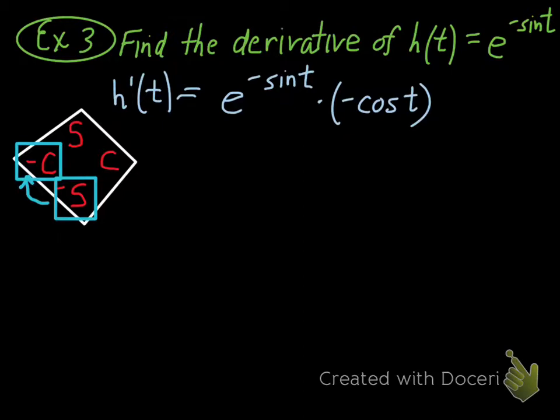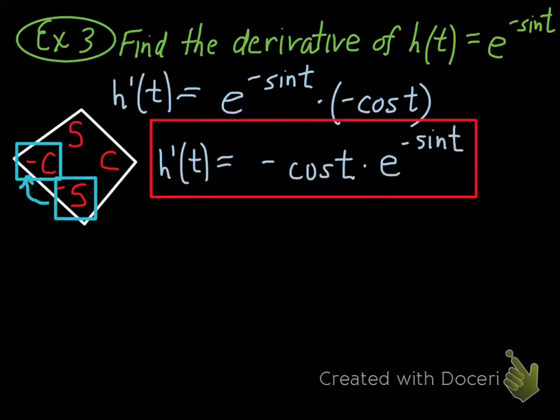Reformatting the answer into the common multiple-choice form you'd see on the AP exam: negative cosine t times e to the negative sine t is the final answer.